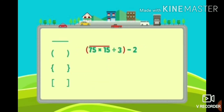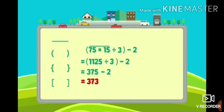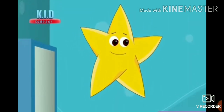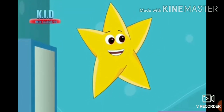This is the way to solve the problem. See this problem: 75 into 15 divided by 3 minus 2. Here a line bracket is given, so we do the bracket first. The answer inside the bracket — 373. So 4 into 3: how much is 4 into 3? That is 12. Then 18 minus 9 is 9. Add those two: 12 plus 9. That is 21. Whatever problem is given, first solve the bracket, next Of, then Division, Multiplication, Addition.